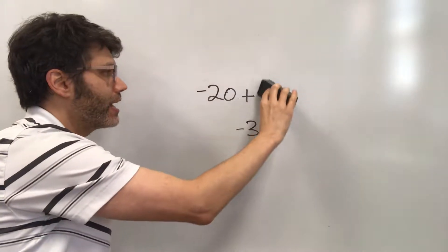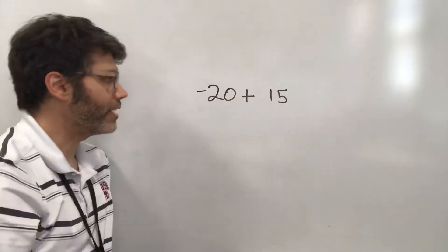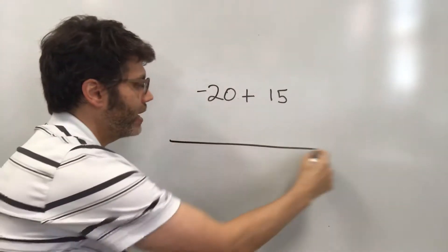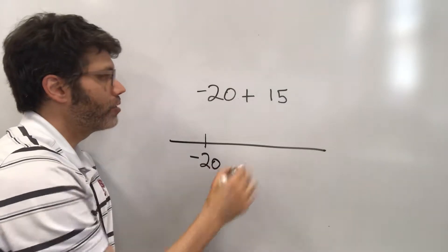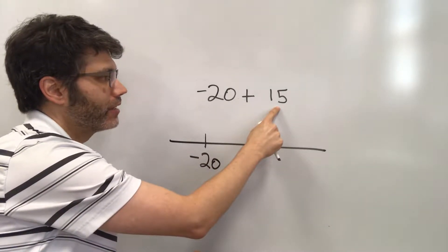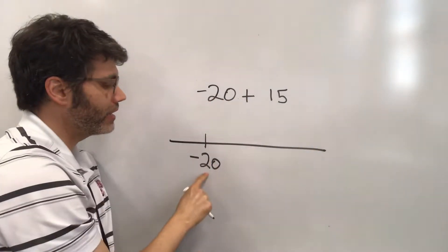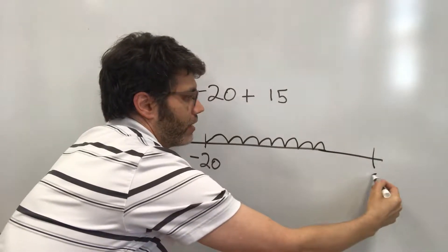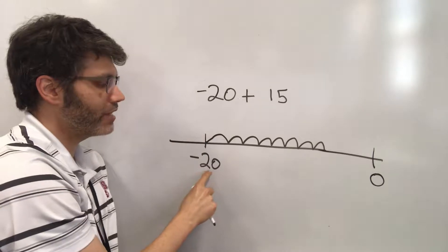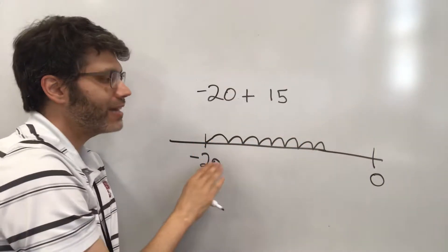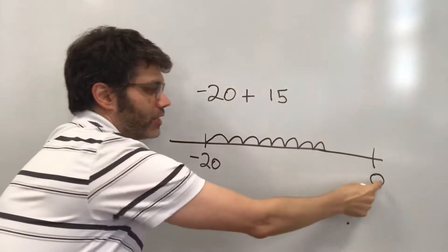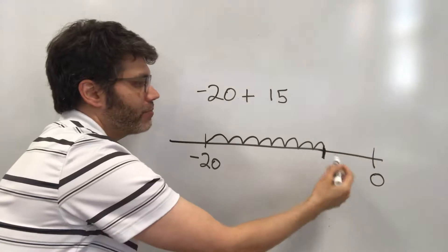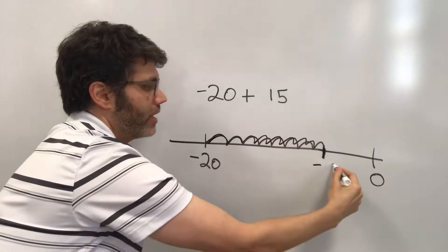What if we're adding a negative and a positive? A number line is a good way to think of it. Let's say that we're at negative 20 on the number line. When we're adding something positive, we're going to be going to the right. So here we would start at negative 20 and go to the right 15 units, hopping over 15 units.